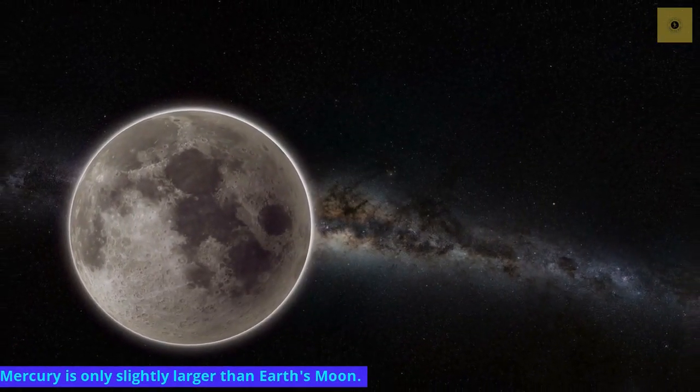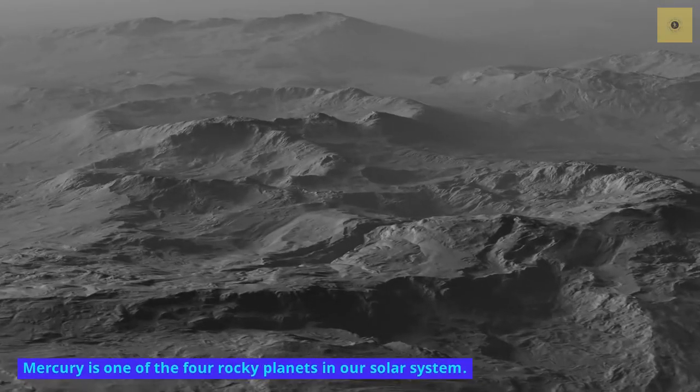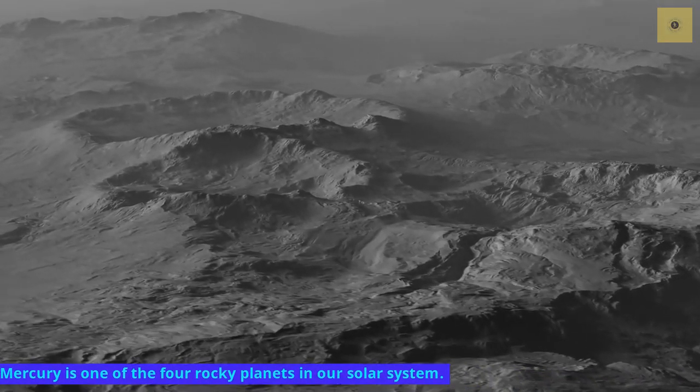Mercury is only slightly larger than Earth's moon. Mercury is one of the four rocky planets in our solar system.